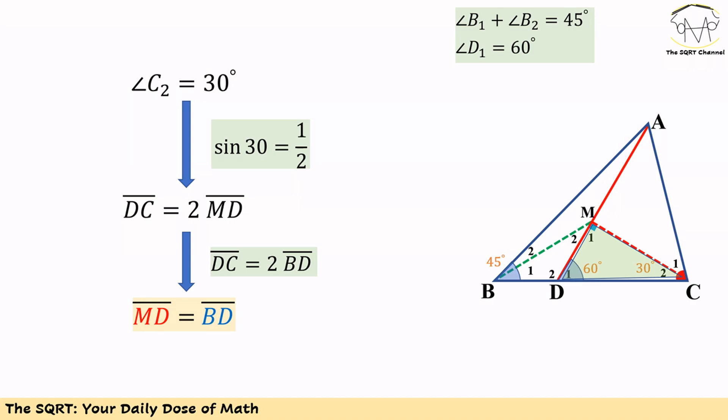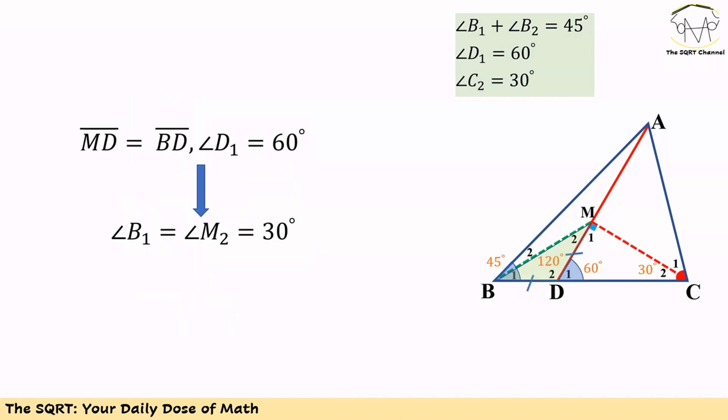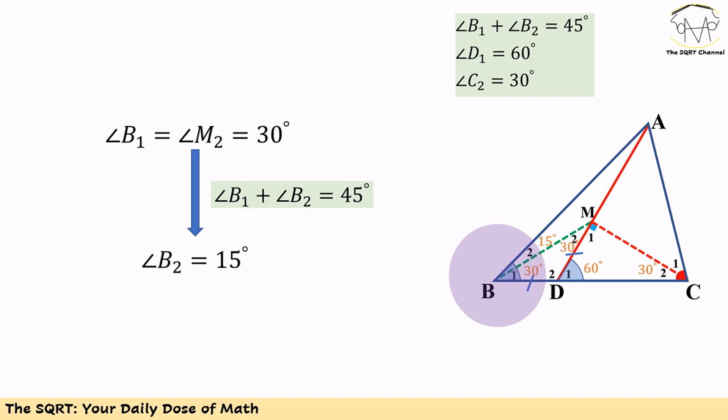Now let's focus on triangle MDB. In this triangle, first we know that D2 equals 120 degrees. Then we know BD and MD are equal, so M2 equals B1 equals 30 degrees. Remember B1 plus B2 was 45. Now we have 30 degrees for B1, and it results in 15 degrees for B2.